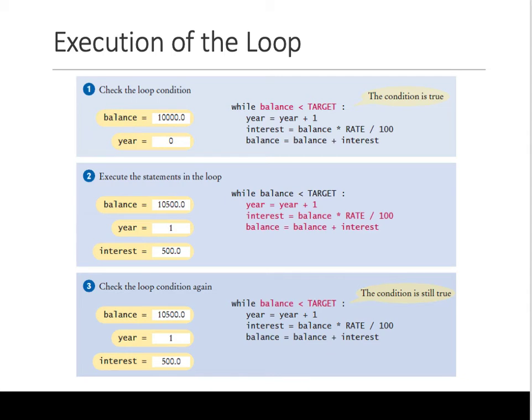So execution of the loop, how it happens. These slides basically show you first remember the balance was 10,000. Inside the loop, the year was zero. So when all these instructions execute, you are at this point. So balance is now 10,500 and year is one and interest was 500. When all these three lines execute, you are at this point.